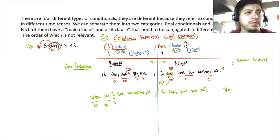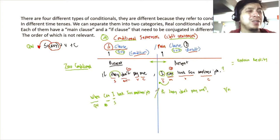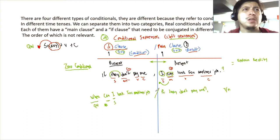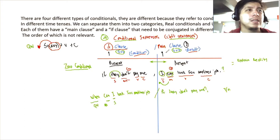We have our condition and our result, and we are explaining how reality functions. The subjects don't have to be the same — they can be 'they' in one clause and 'I' in another, or the same subject in both. The zero conditional is the simplest conditional. The other three get a little more difficult.